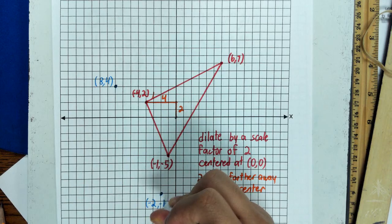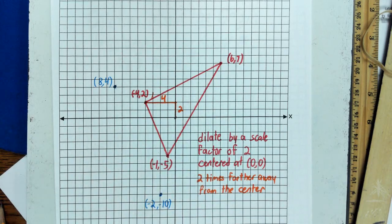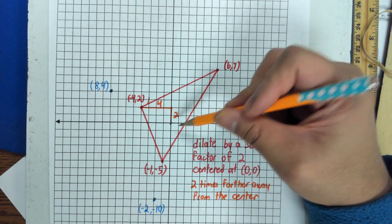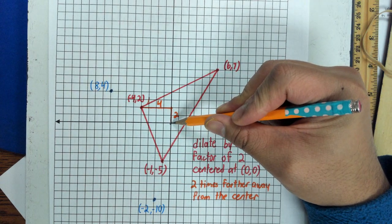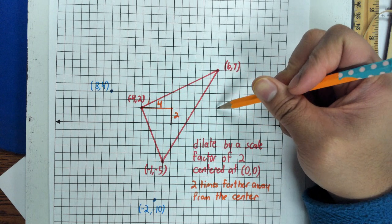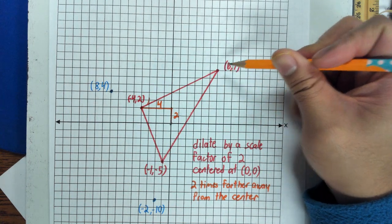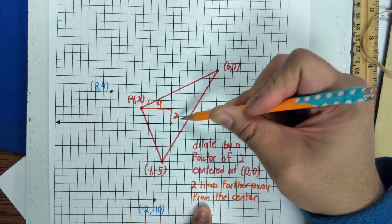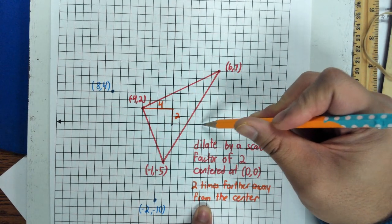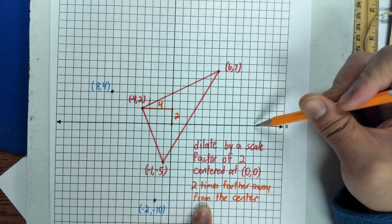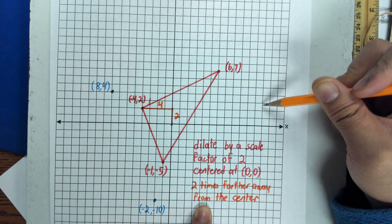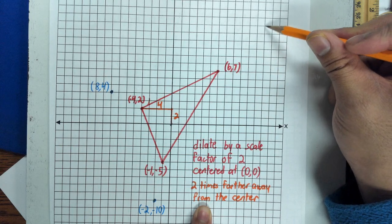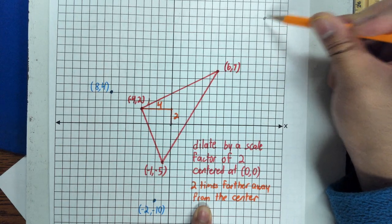That new point is at negative two, negative ten. For my third point at six, seven: from the center it goes over six and up seven. With a scale factor of two — two times farther away — I need to go over twelve and up fourteen. There is my new point.